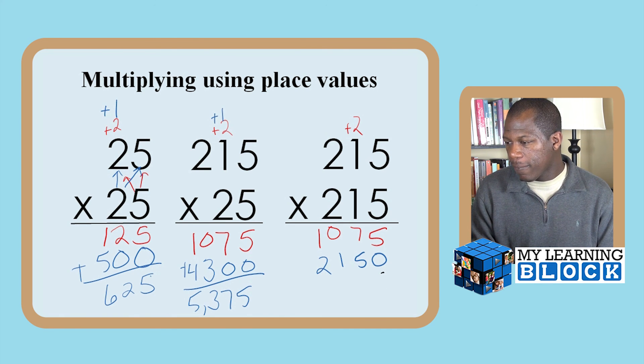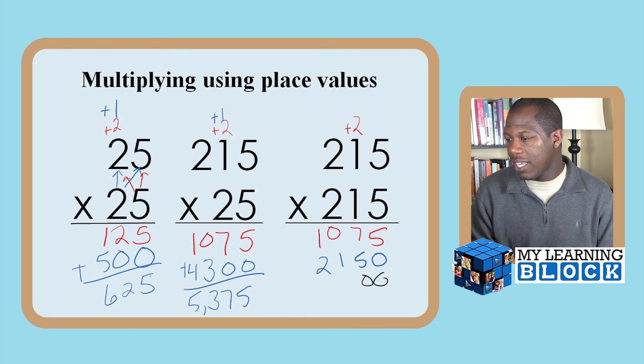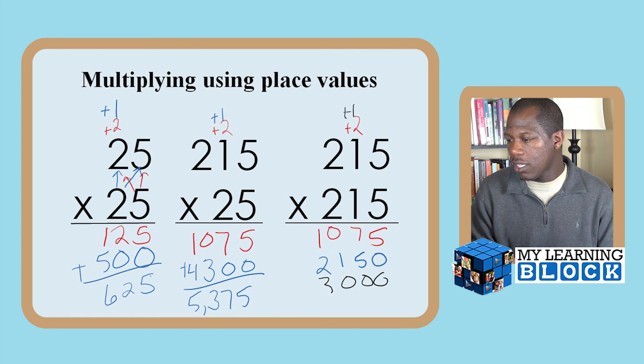So zero, zero. 2 times 5 is 10, 0, carry my 1. 2 times 1 is 2 plus 1 is 3. 2 times 2 is 4. So I'm going to add it up: 5, 12, carry my 1, 2, I got 6 and 4.